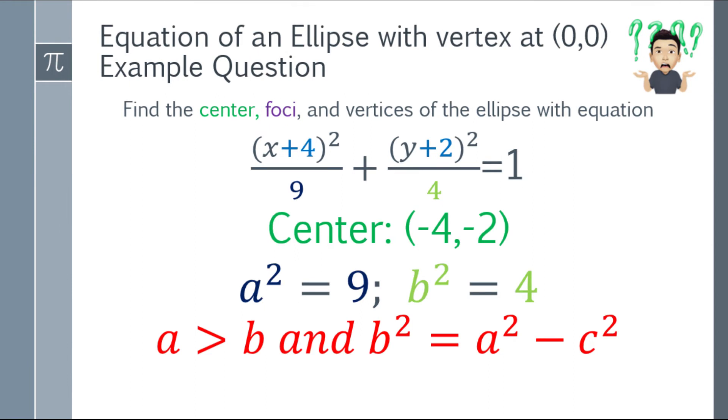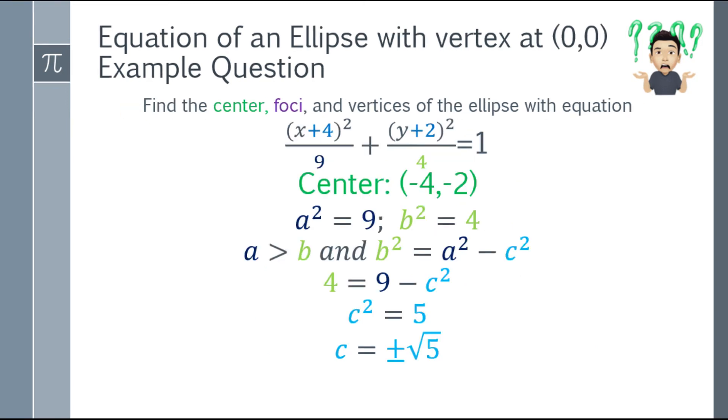Now, to find the foci, we need to solve for c. So remember, we have the formula: a is greater than b, and b square equals a square minus c square. And a square equals 9, and b square equals 4. So algebraically, 4 equals 9 minus c square. You have to solve for c square. c square equals 5, and c equals plus minus the square root of 5.